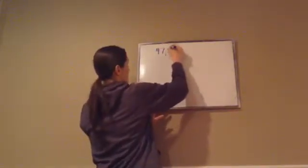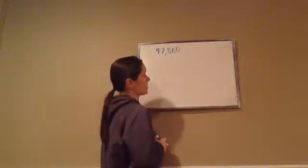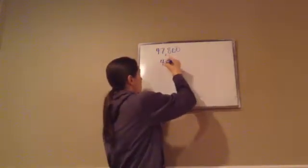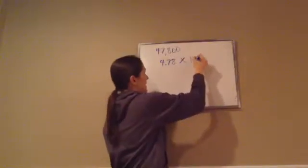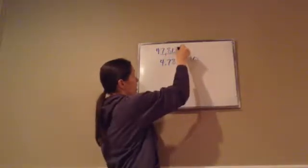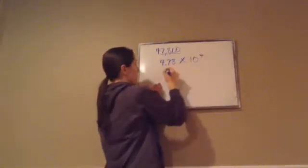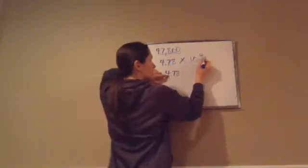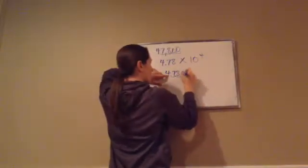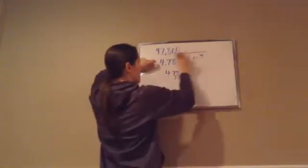Now a three-part problem: write the following numbers in scientific notation. Part A: 47,800. They already gave us the standard number, so we just put it in scientific notation. 4.78 times 10 — decimal needs to move 1, 2, 3, 4 places — so 4.78 × 10⁴. Let's check: 4.78 times 10 to the 4th, moving right 1, 2, 3, 4, filling in zeros with a comma, gives 47,800. That matches, so we've done this correctly.